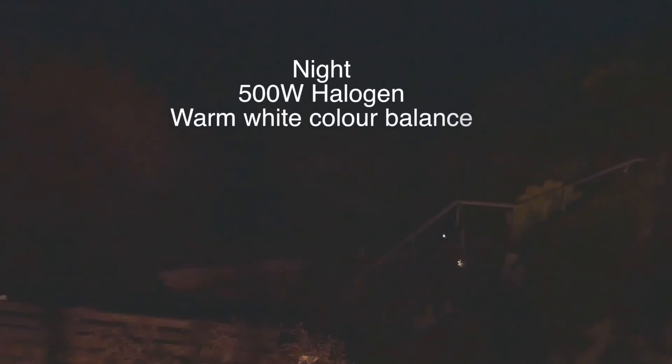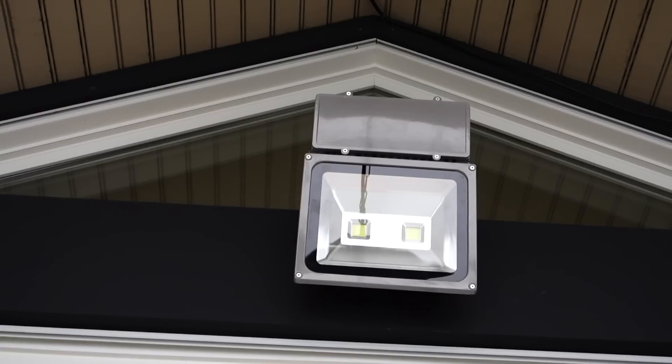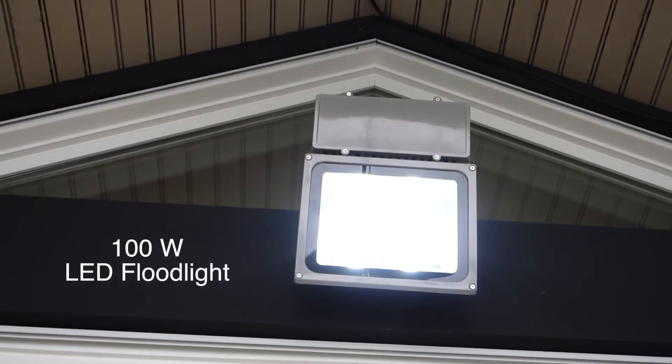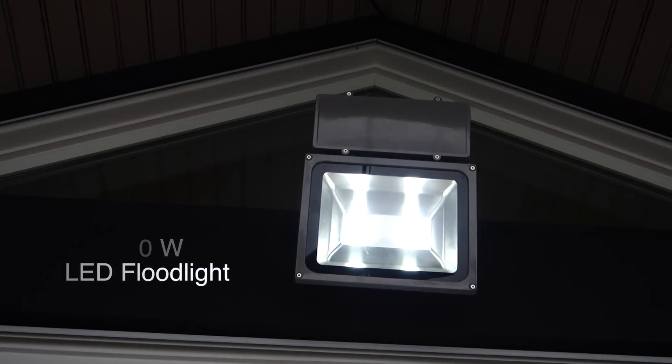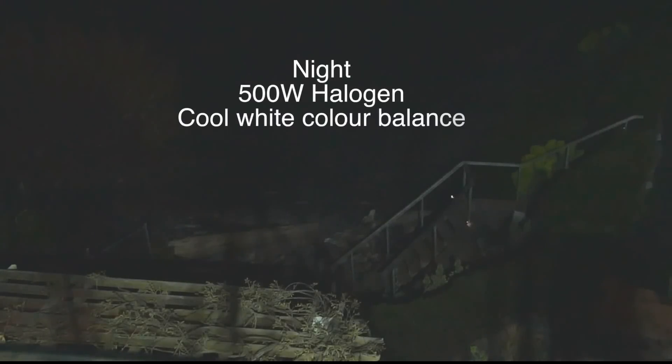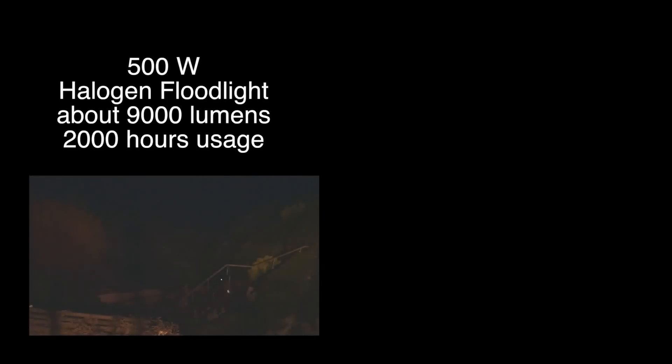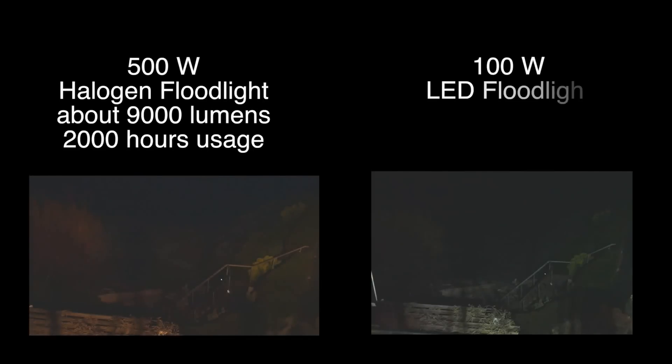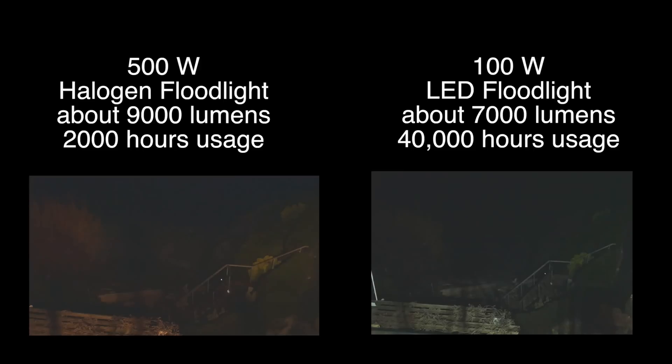The 100 watt light is 40,000 or 20,000 hours, or 20 times the running life of the halogen, plus a much lower running cost of course in watts. It's a cool white balance and it's not bad. It's about 7,000 lumens compared to the 9,000 of the halogen. For the price, I think I might go buy another one. Thanks for watching.